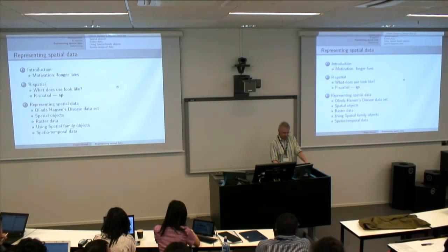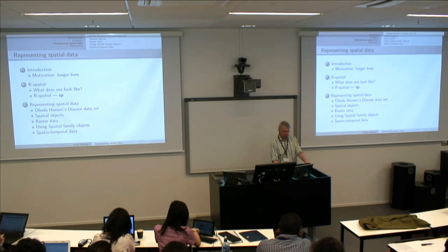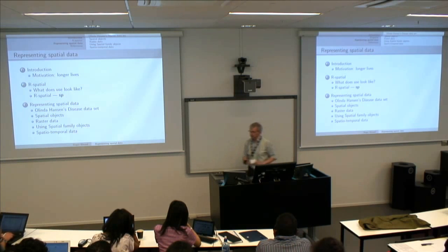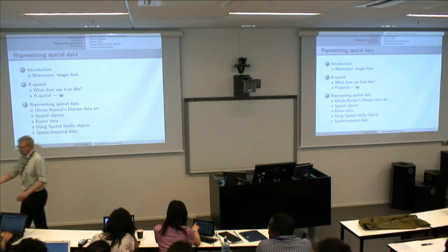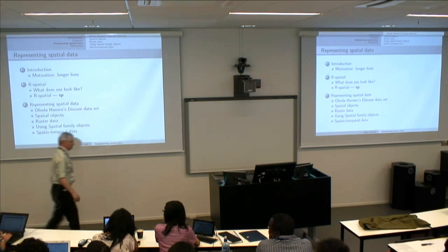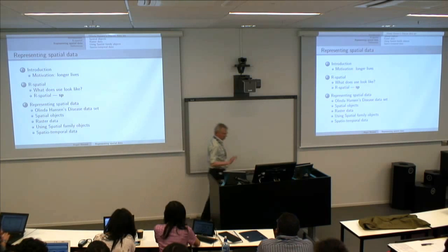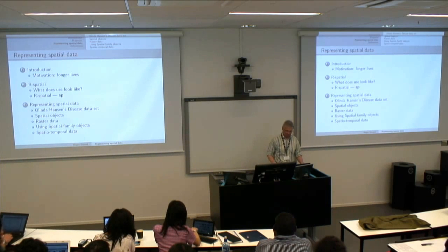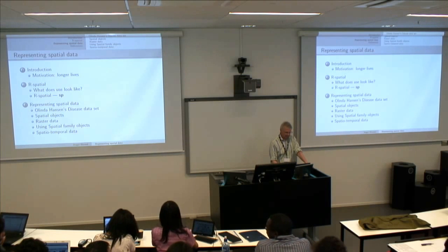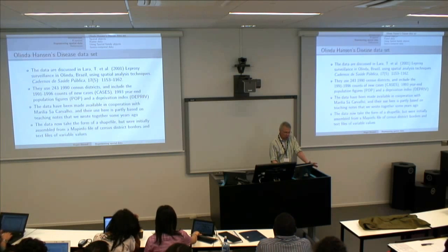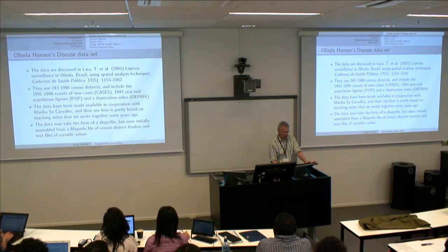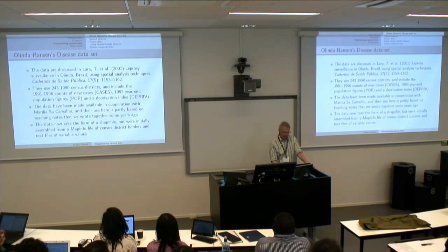Now we're through to representing spatial data. What were the kinds of things we were thinking about when we began? To have something to work on, we're going to use an example dataset — originally from Brazil, from Olinda — based on registered incidents of Hansen's disease in census districts in the city of Olinda.